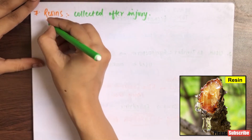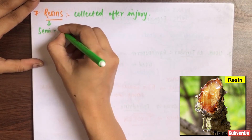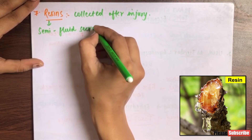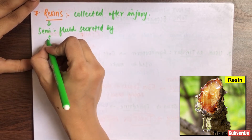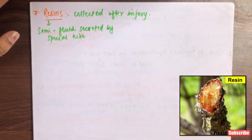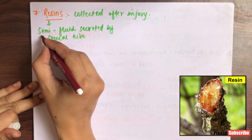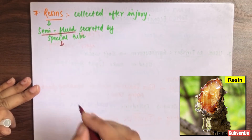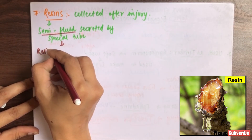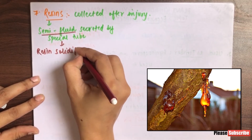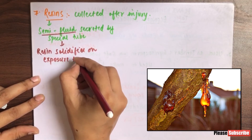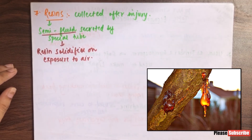Resin is basically semi-fluid in nature — it is a semi-fluidic liquid — secreted by special tubes inside gymnosperm plants. It is of semi-fluid nature, and as soon as it comes into exposure to air, the resin solidifies. So resin solidifies on exposure to air.